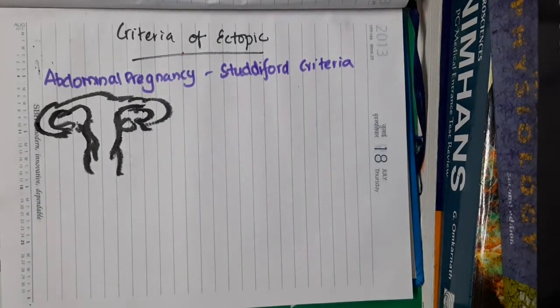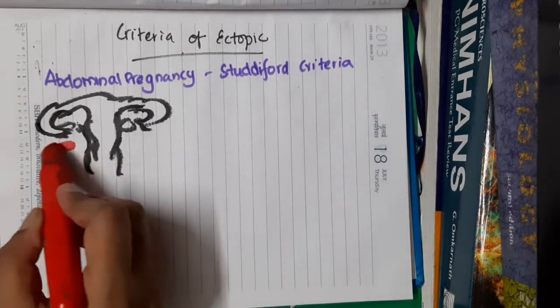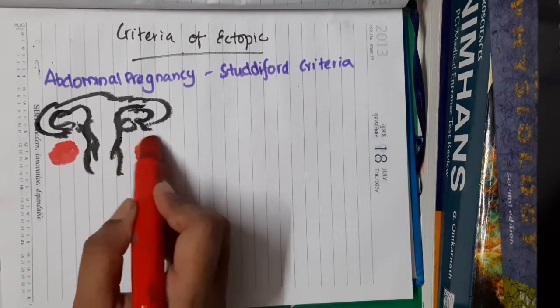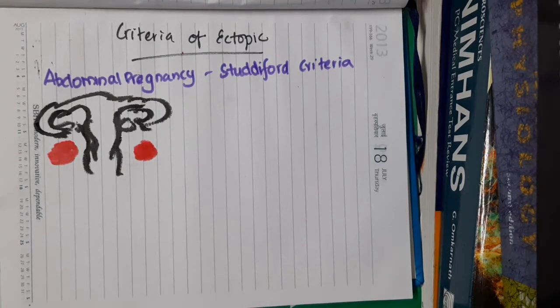In abdominal pregnancy, the ectopic is present in the abdomen, on some peritoneal surface — at one place only, not at two places.